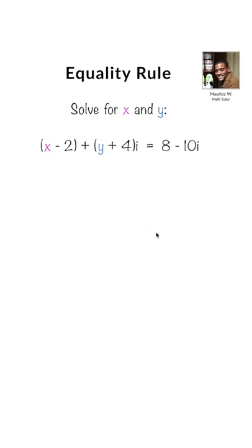So let's say you were asked to solve for x and y, and you were given x minus 2 plus y plus 4i is equal to 8 minus 10i.